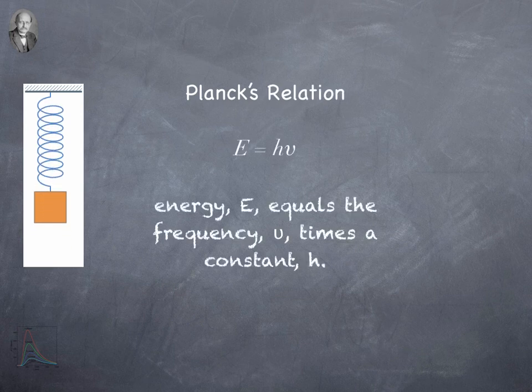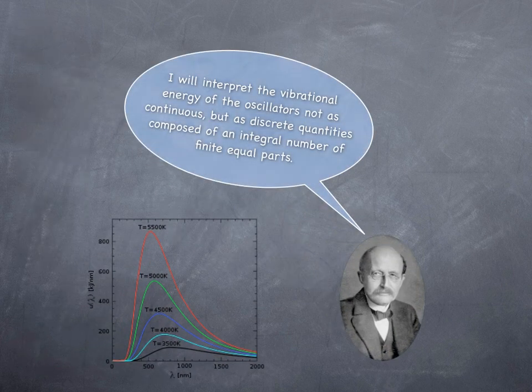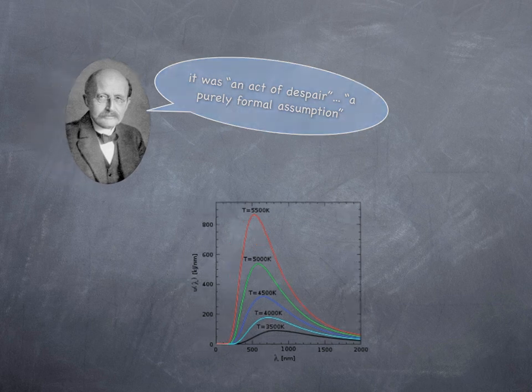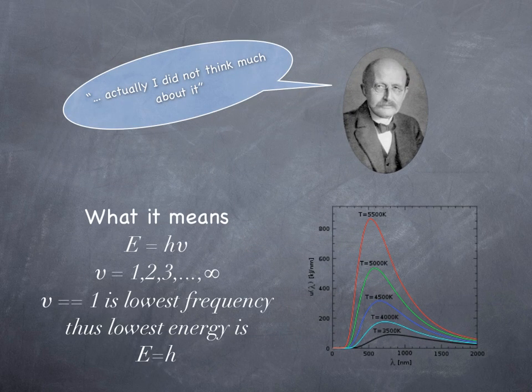So nu is going to be a whole number — one, two, three, and so on. He did it just to make the math work out. He said it was an act of despair, a purely formal assumption, and he didn't think there was any material reality to it necessarily. However, it turned out that he got a much better model of the spectra this way.